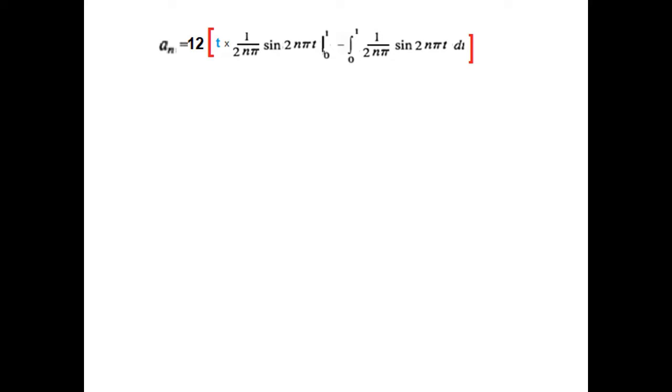Okay, so, we were here, and now, let's proceed. So, we're just multiplying both with 12, so, it becomes 12t, and this term, the first term, and the second term also becomes 12 over 2nπ, and integral of the internal.